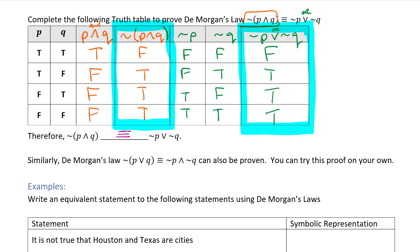Similarly, it is not true that P or Q is equivalent to not P and not Q. This can also be proven — it's basically the same process — and I'll let you do that one on your own. Both laws are true.